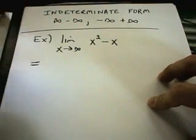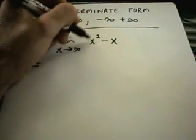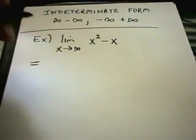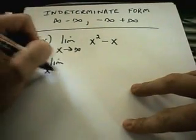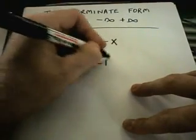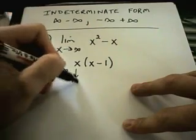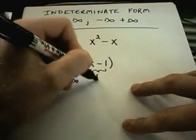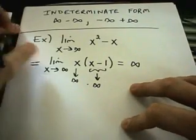In this case, the limit as x goes to infinity of x squared minus x. Intuitively, x squared is getting much bigger, much faster than x, so it seems like this should still go off to infinity. An easy way to justify that is by factoring out an x. Now as x goes to infinity, x is going to infinity and x minus 1 is also going to infinity — you have infinity times infinity, which is infinity. And that's your answer.